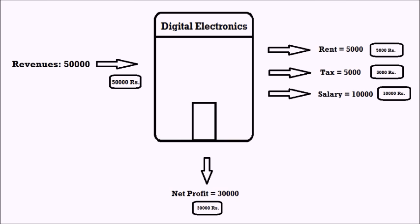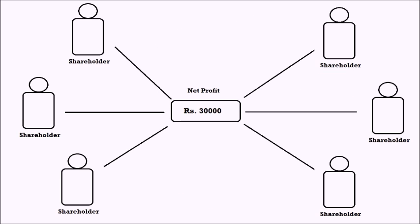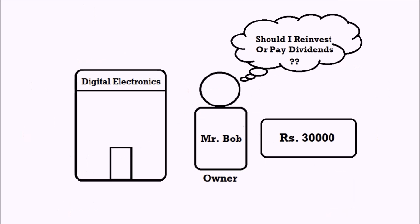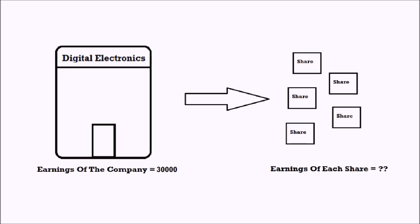Since Bob is not the complete owner of the business, he cannot retain the entire profit of 30,000 rupees. He will need to divide the profit among the shareholders depending on the number of shares each shareholder holds. Every shareholder, irrespective of how many shares they hold, is a part owner of the company and has a claim over its assets and earnings. Since Bob holds the majority shares — or ownership stake — he is the head of the company and has the right to decide whether profits are given to shareholders as dividends or reinvested in the business.